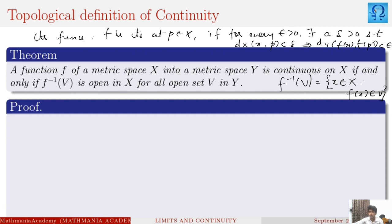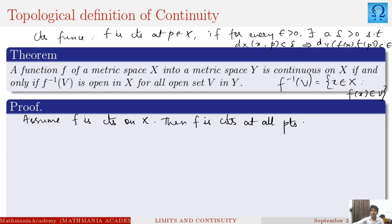Let us start the proof formally. Let us assume the function f is continuous on X. If the function is assumed to be continuous on X, it means f is continuous at all points of X. The continuity means the epsilon-delta definition that we have seen.